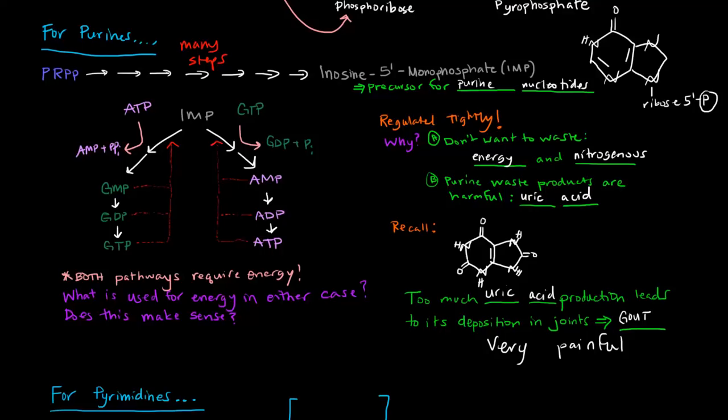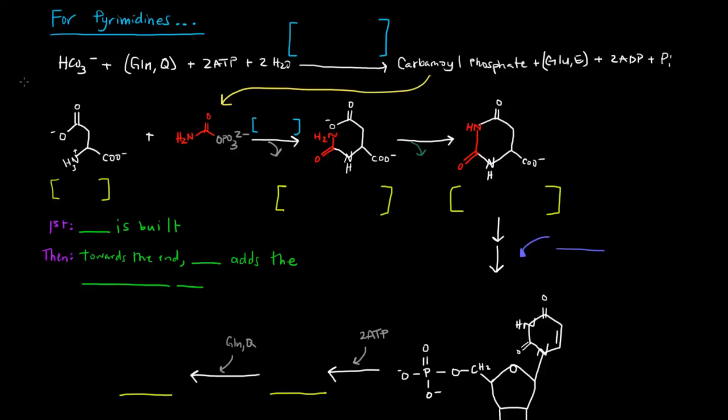But what about for pyrimidines? For pyrimidines, the process is a little bit different. In pyrimidines, we start off by producing carbamoyl phosphate from bicarbonate and glutamine and some ATP. We're producing carbamoyl phosphate. In this case, we're going to have this enzyme, carbamoyl phosphate synthetase, which we've talked about in the urea cycle. But that was carbamoyl phosphate synthetase 1. This one is carbamoyl phosphate synthetase 2, or CPS2. It's still making carbamoyl phosphate, but in a slightly different way. And in this case, it's involved in pyrimidine synthesis.